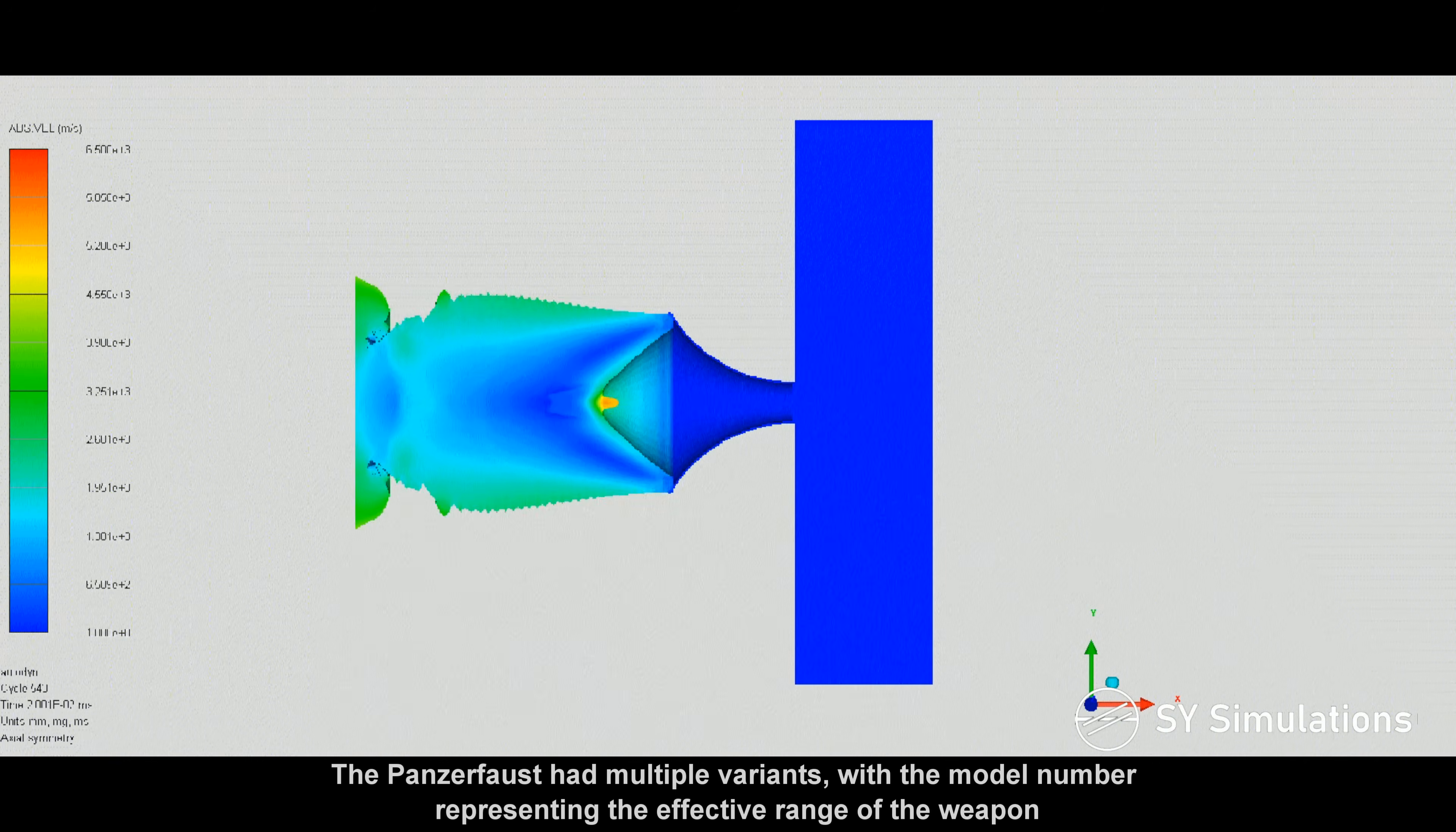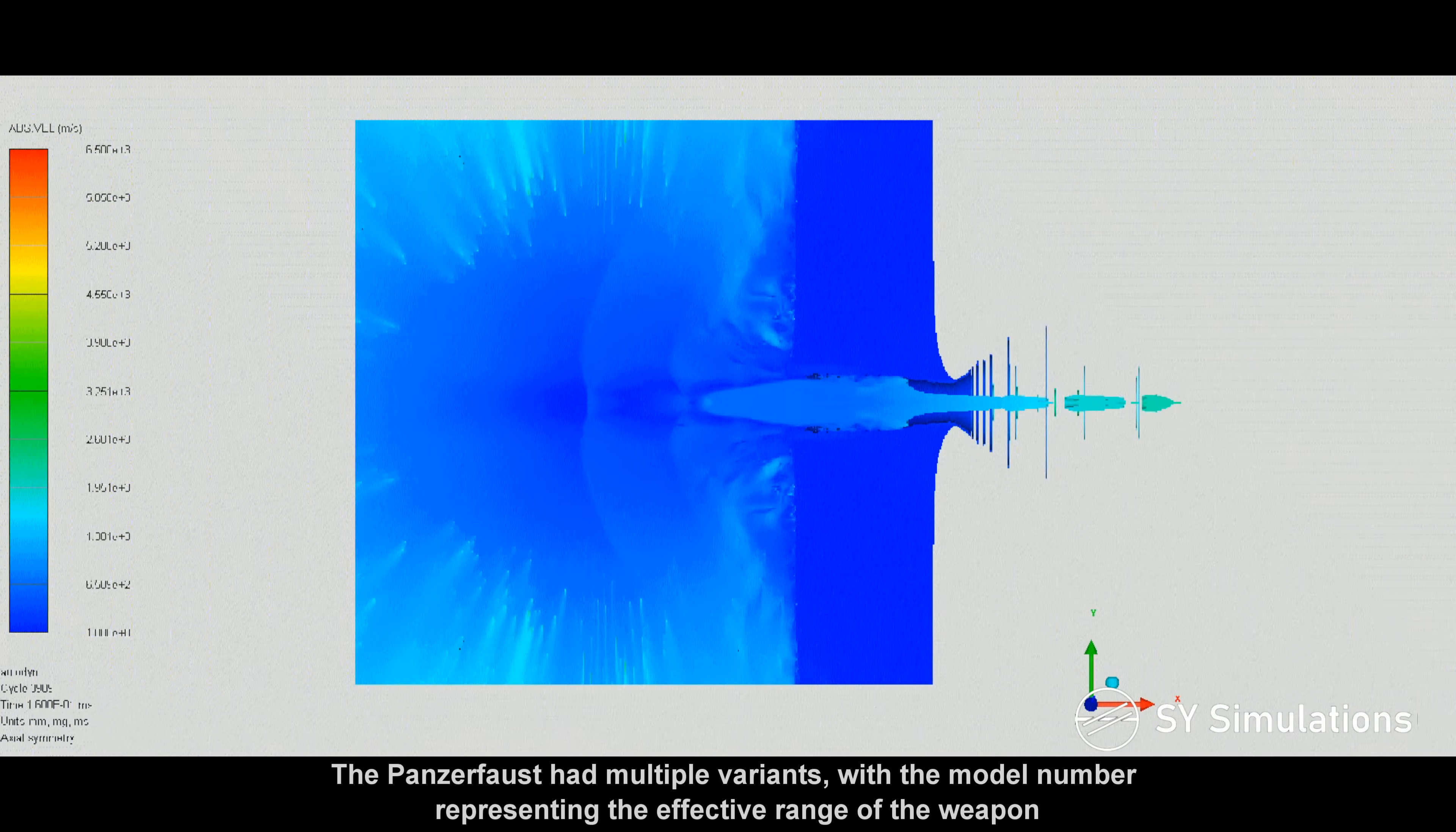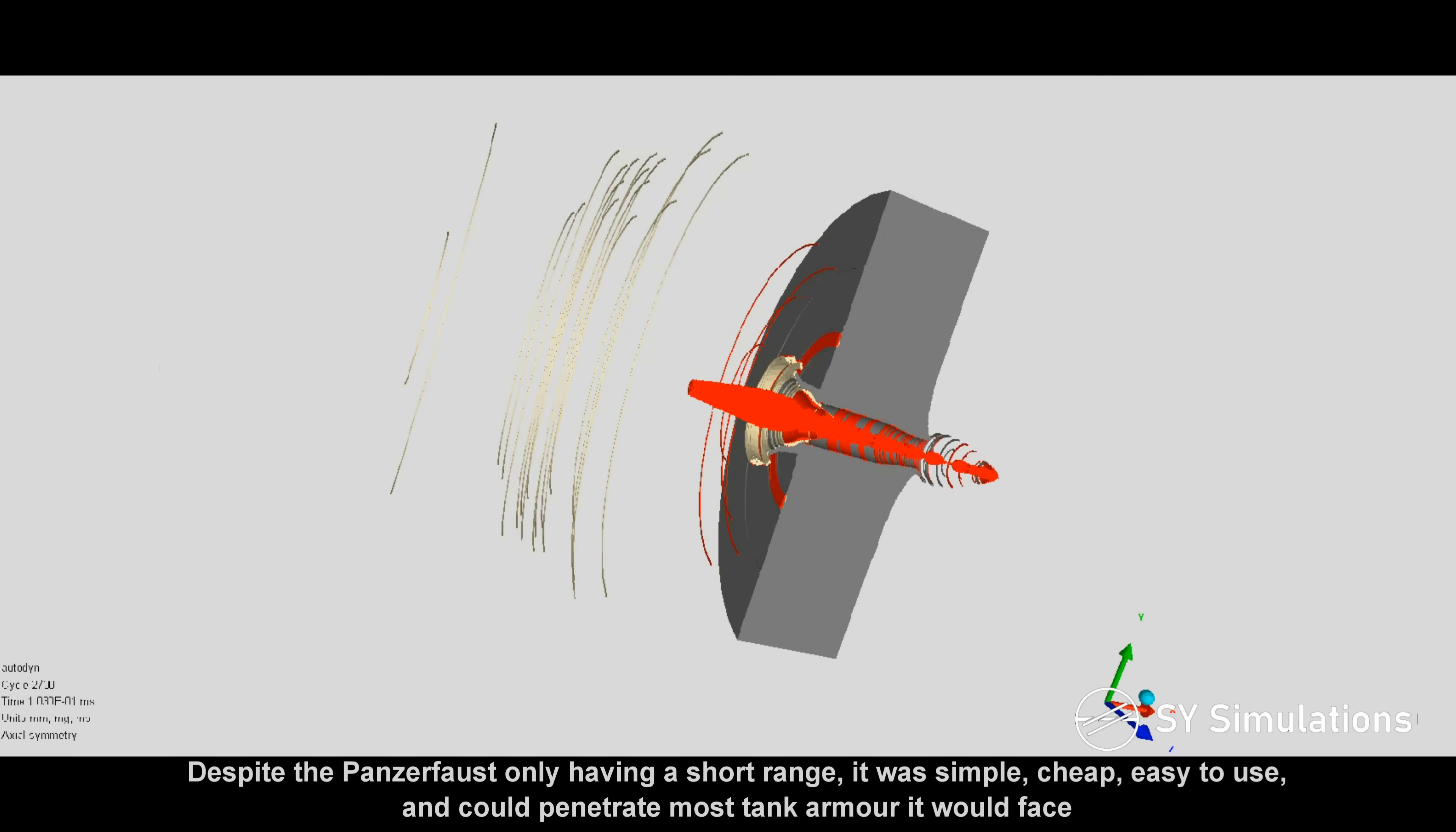The Panzerfaust had multiple variants, with the model number representing the effective range of the weapon. Despite the Panzerfaust only having a short range, it was simple, cheap, easy to use, and could penetrate most tank armor it would face.